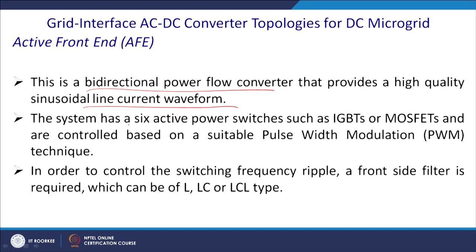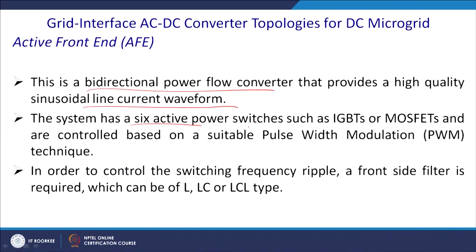If it is a two-level, three-phase inverter, power switches such as IGBTs or MOSFETs can be used. For IGBTs, the rating is in the range of 10 to 100 kVA, and for MOSFETs it is below 10 kVA. Generally, above 5 kVA we prefer IGBTs instead of MOSFETs. The converter takes power at unity power factor from the grid with low THD and provides a high-quality sinusoidal current waveform, injecting no harmonics.